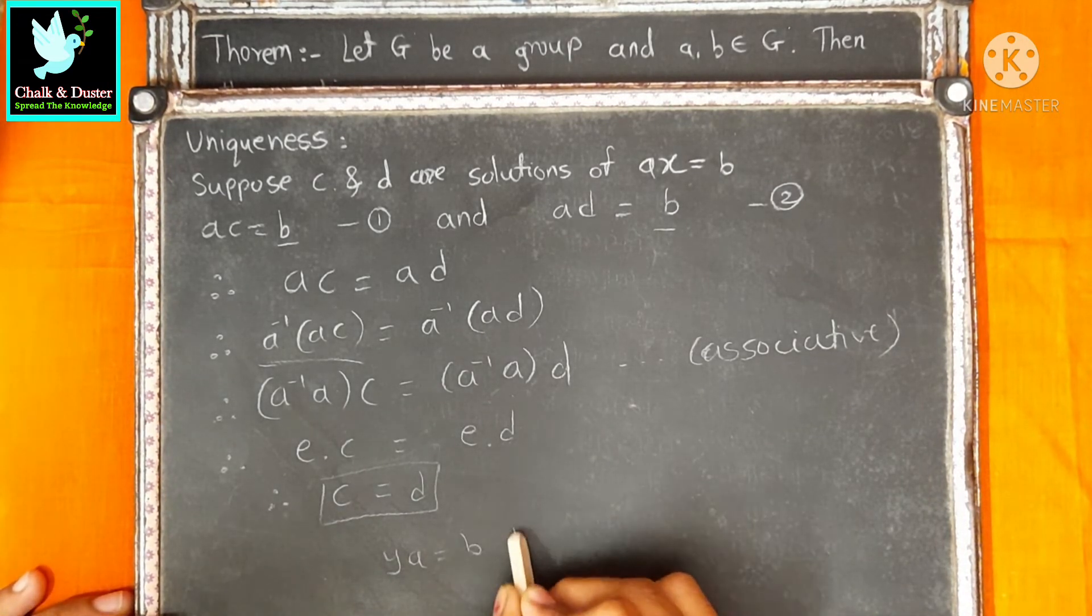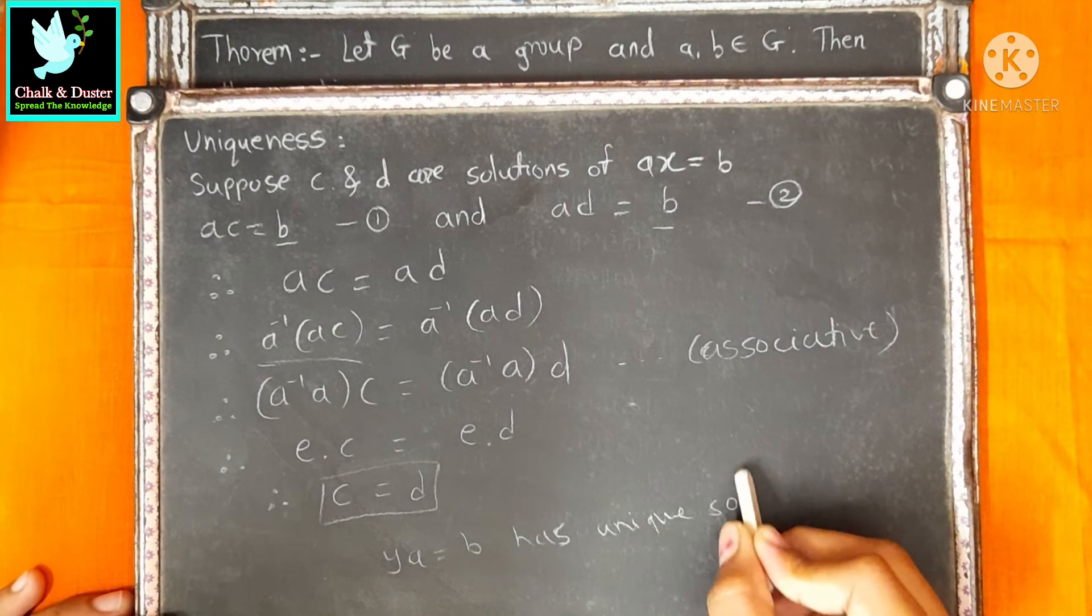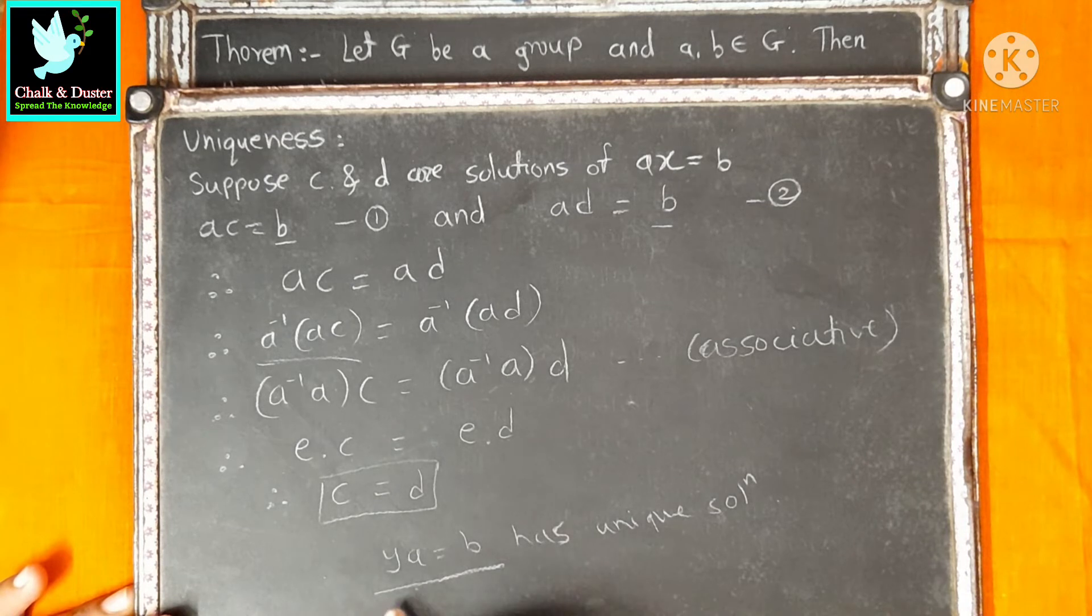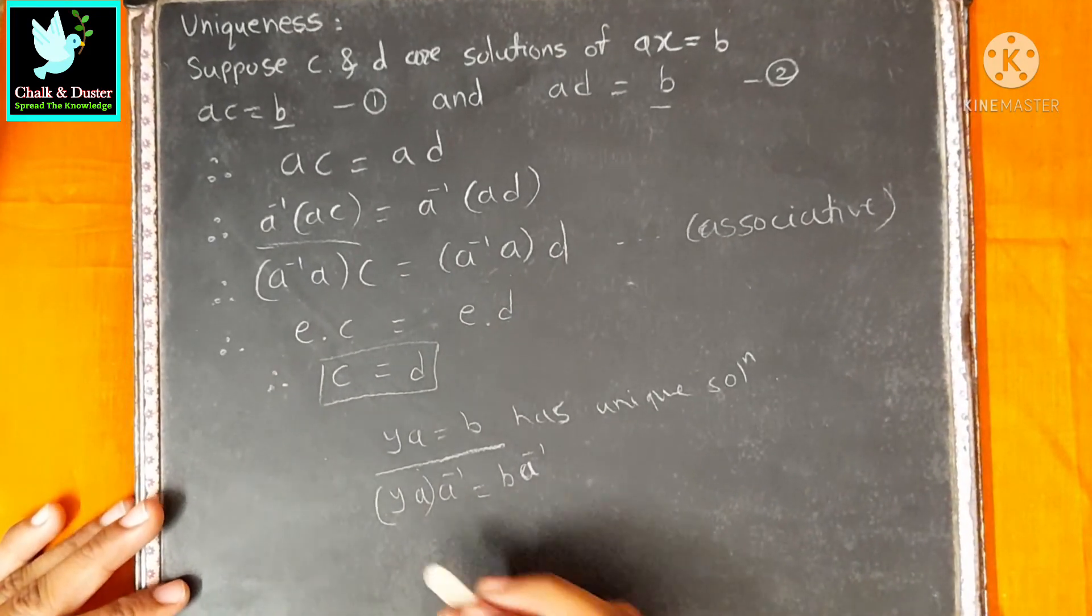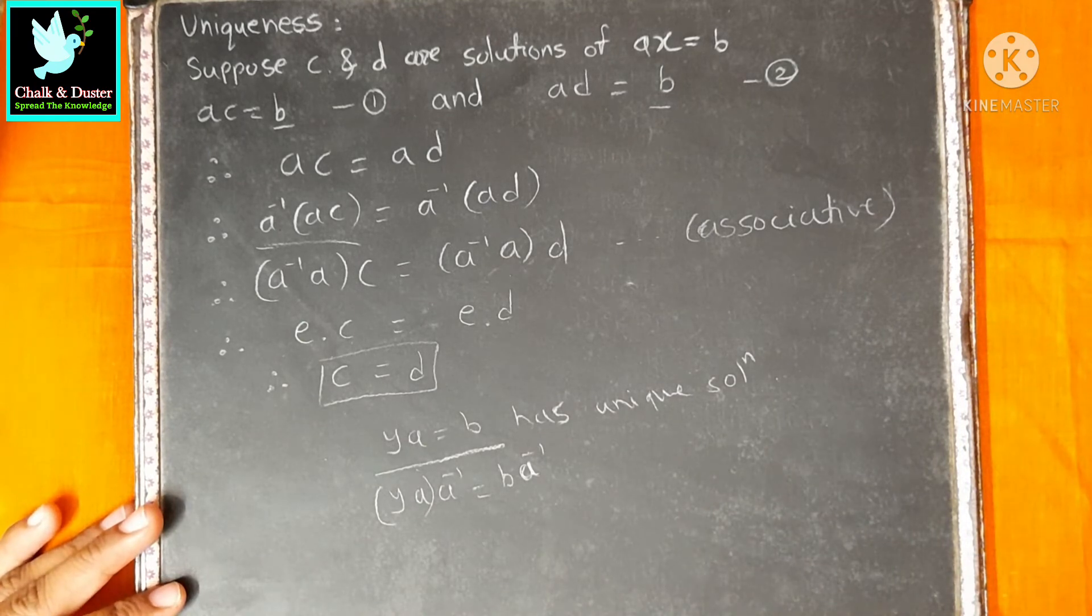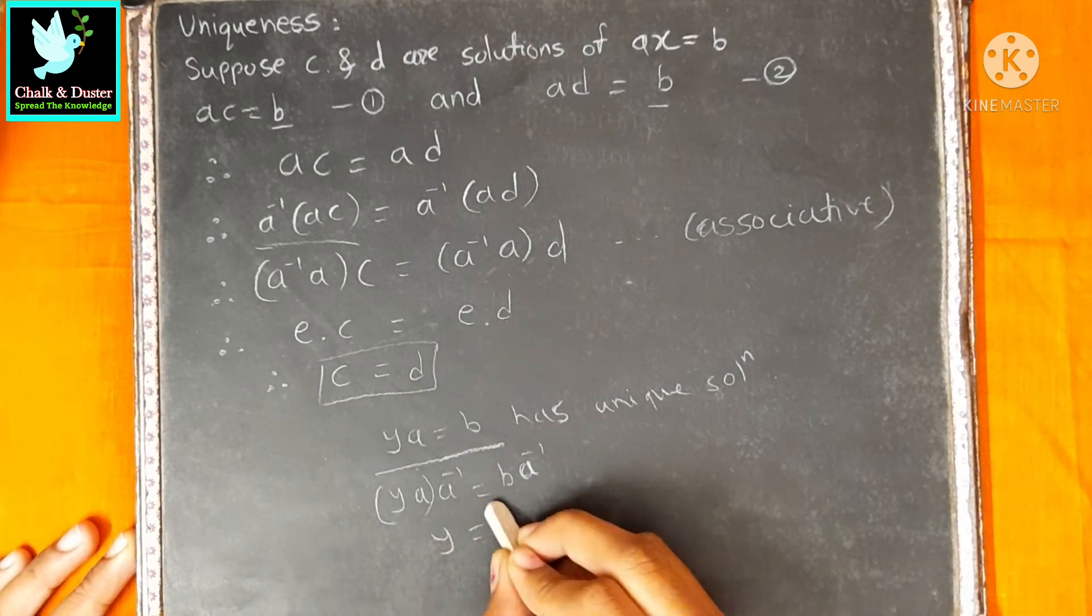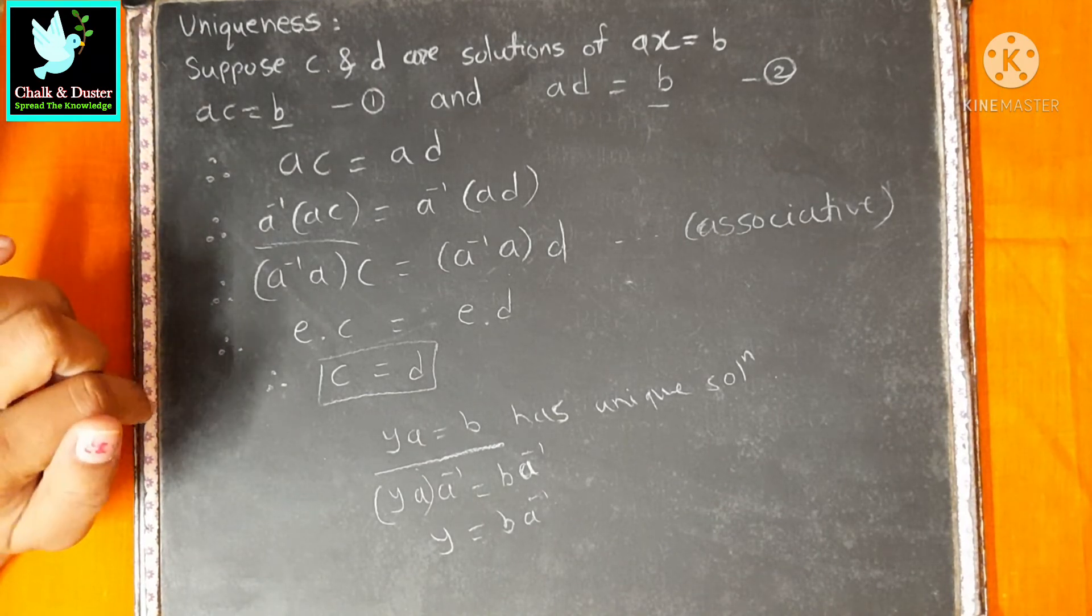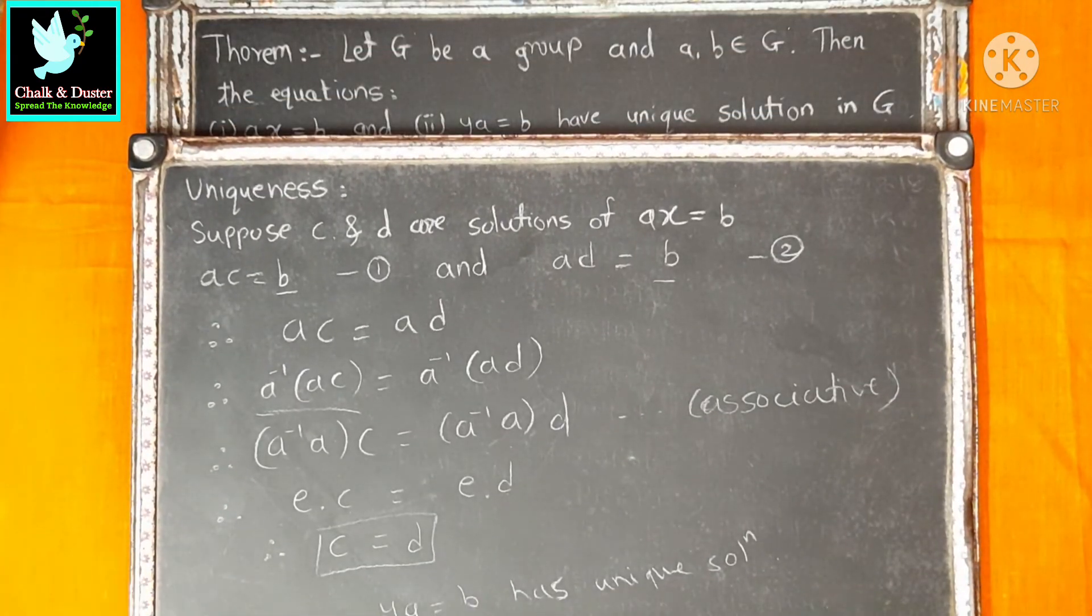So, AX equal to B has unique solution. You have to prove similar lines for YA equal to B uniqueness. I hope you understand. If you have any doubt in this theorem, please ask in comment box. Thanks for watching.